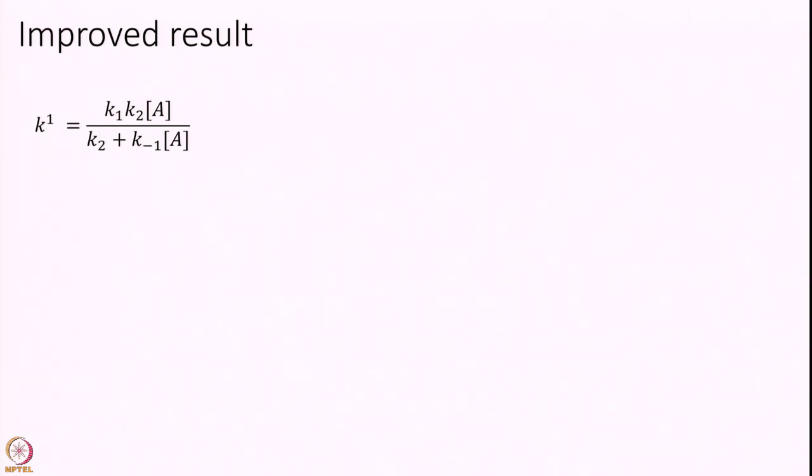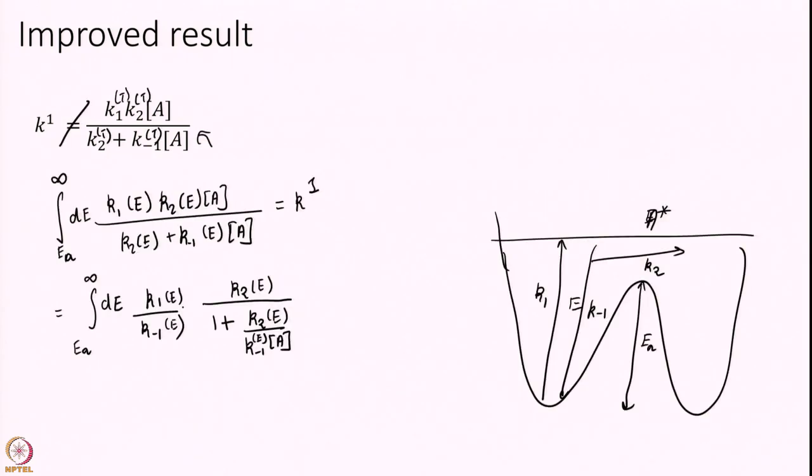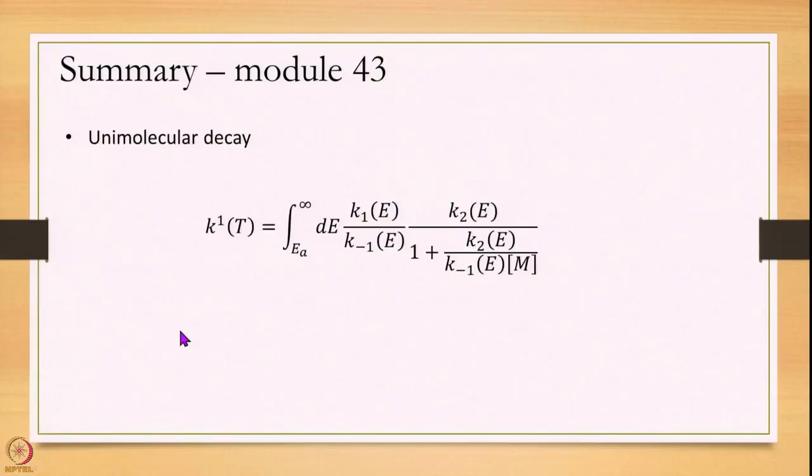Just a quick point. This quantity that we had now, K1 over K minus 1, this represents the equilibrium constant between A and A star. That is the reason that I massaged my equation to have the form which has K1 over K minus 1, because that is an easier quantity to calculate. Now the question becomes, how do we calculate these quantities? How do we calculate this K1 and K minus 1 and K2?